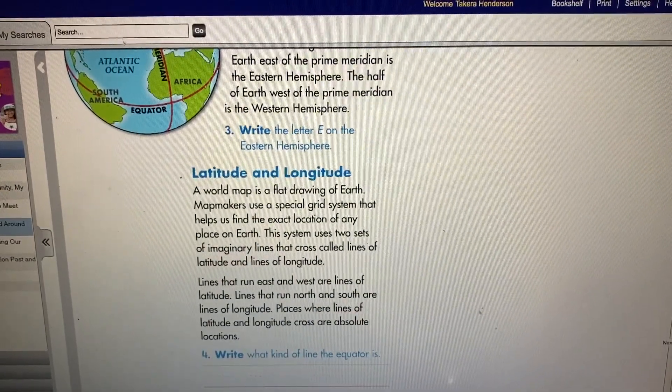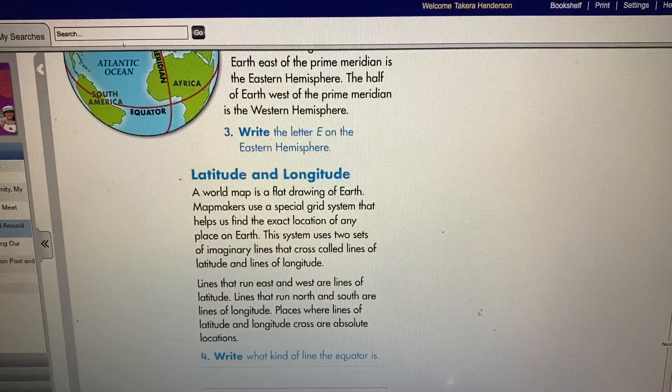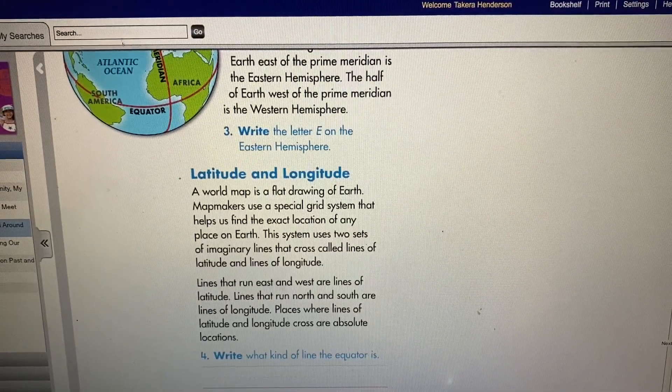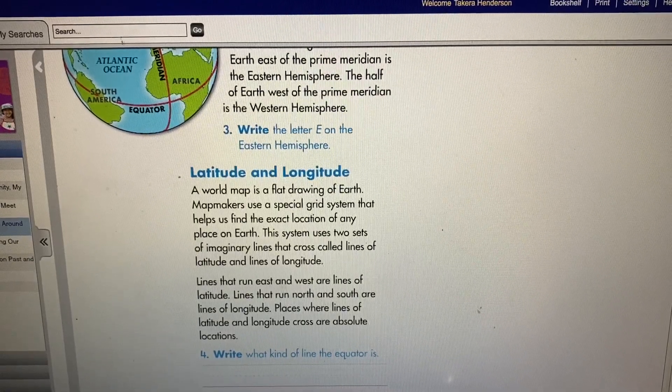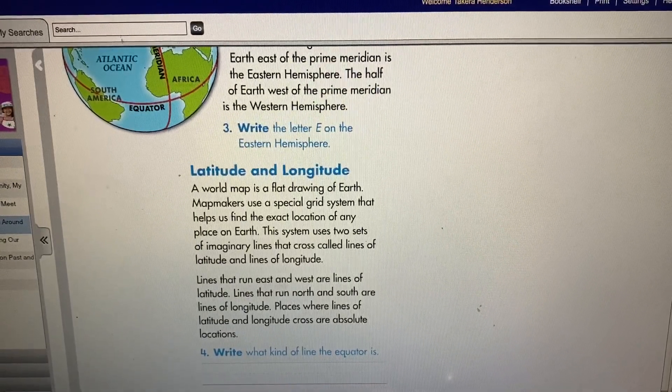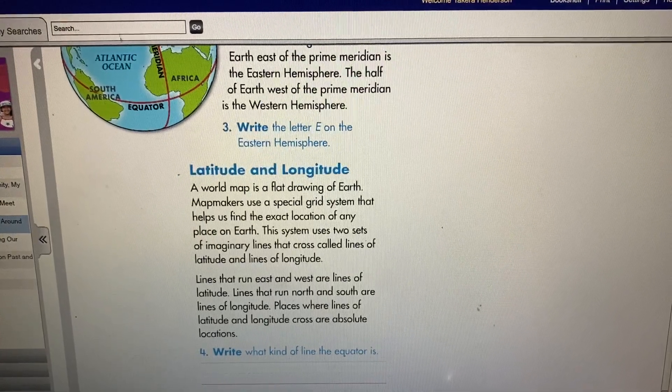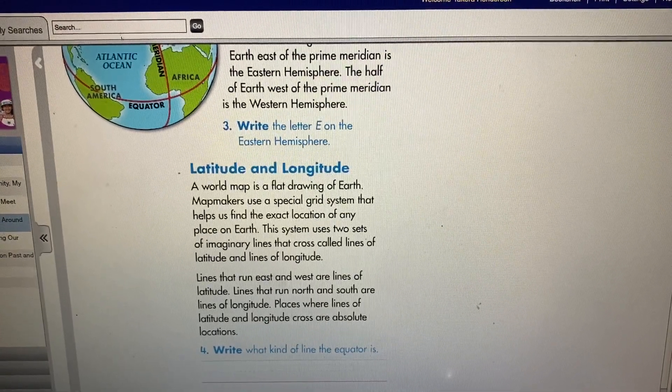Latitude and longitude. A world map is a flat drawing of Earth. Mapmakers use a special grid system that helps us find the exact location of any place on Earth. This system uses two sets of imaginary lines that cross called lines of latitude and lines of longitude.